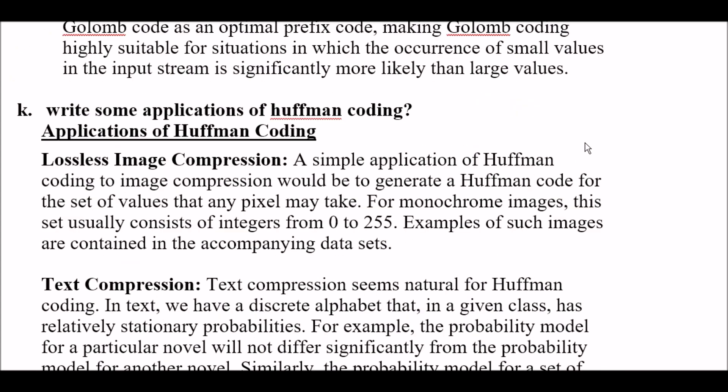Write some applications of Huffman coding. Answer is here - some applications of Huffman coding. First one is lossless image compression. A simple application of Huffman coding to image compression would be to generate a Huffman code for the set of values that any pixel may take. For monochrome images, the set usually consists of integers from 0 to 255. What is the range of integers here? That is 0 to 255. Examples of such images are contained in the complying data sets.